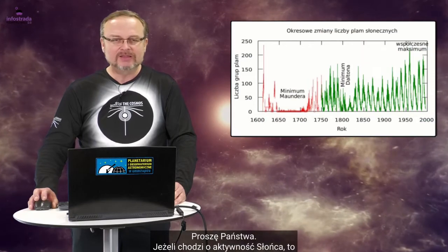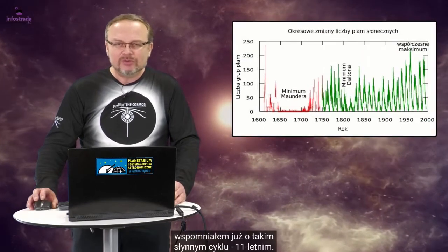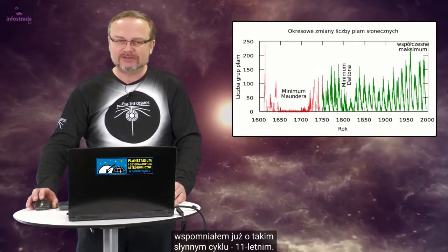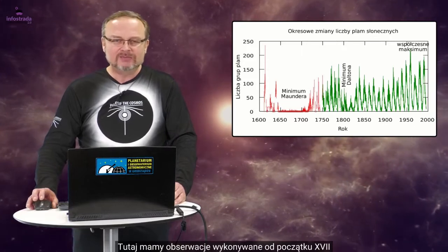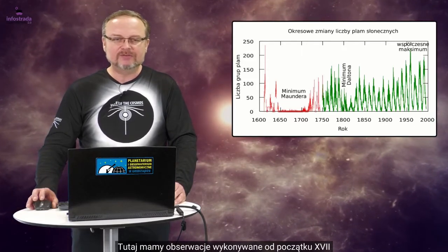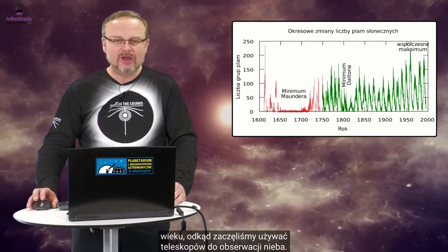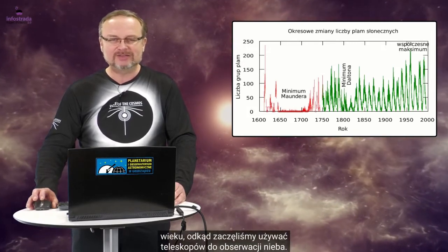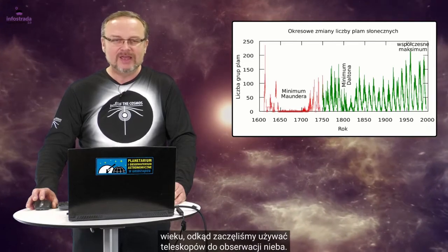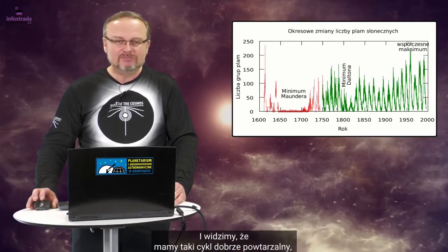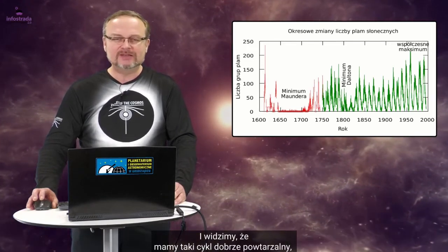Proszę Państwa, jeżeli chodzi o aktywność Słońca, to wspomniałem już o takim słynnym cyklu 11-letnim. Tutaj mamy obserwacje wykonywane od początku XVII wieku, odkąd zaczęliśmy używać teleskopów do obserwacji nieba. No i widzimy, że mamy taki cykl dobrze powtarzalny 11-letni.